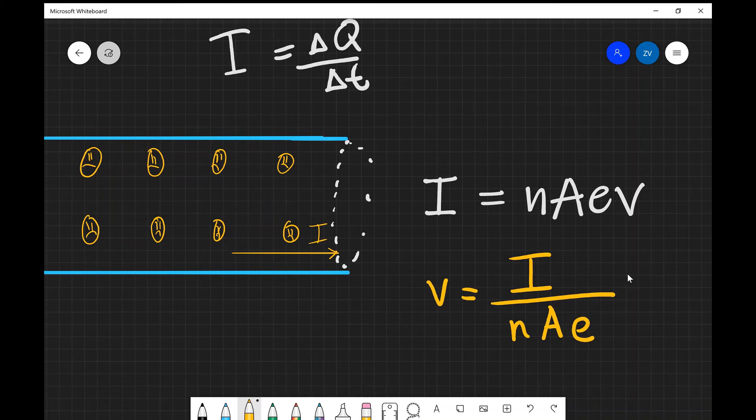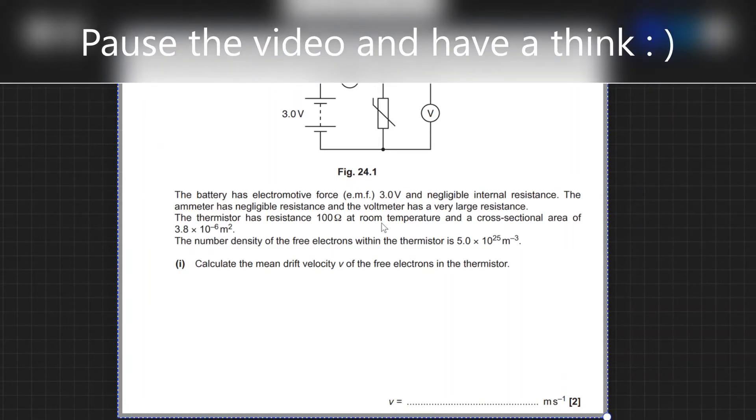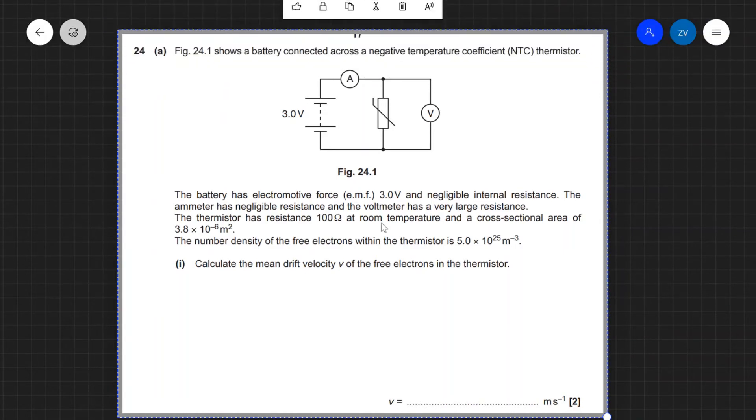Now let's do an example question and let's have a look at a past paper question on this topic. This question in particular is from the 2017 breadth in physics paper from OCR physics A and it is available on the OCR past paper website for which I'm going to provide a link down below in the description. Okay now let's have a look at this question. So what I want you guys to do is to pause this video and have a think and try to calculate the mean drift velocity of the free electrons in this thermistor.